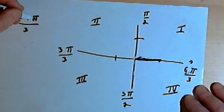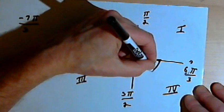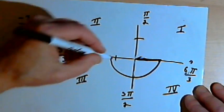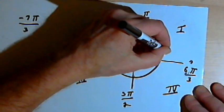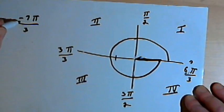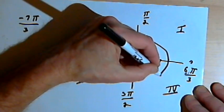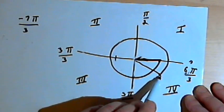I want negative 7π over 3. So if I start in standard position, go halfway around, that takes me to 3π over 3. If I continue a full circle, I get to 6π over 3. I want negative 7π over 3, so I've got to go a little bit more. And that would take me to this point in the fourth quadrant, and my angle would terminate there.